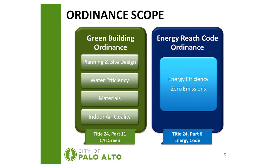The overall scope of the green building and energy reach code ordinances are twofold. The green building ordinance is broken down into four different categories: planning and site design, water efficiency, materials, and indoor air quality. These requirements reside in Title 24 Part 11, entitled Cal Green.